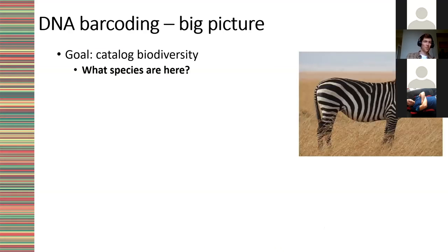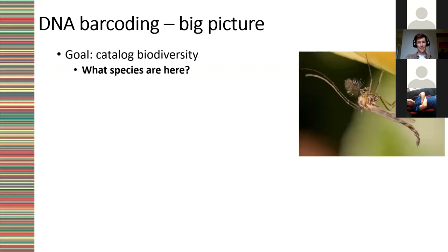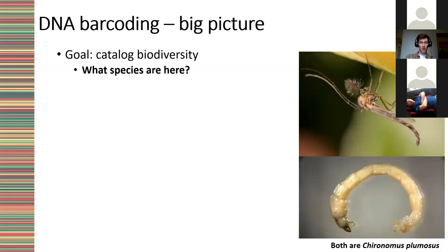The big picture of what we're trying to do at the Center for Biodiversity Genomics in the Adamovich lab is often just answer the question: what species are here? If we're walking in the African savanna and we see a zebra, that's a pretty easy question to answer, but this isn't always the case. A lot of times organisms can be rather small and look very similar to one another, and not all organisms have been characterized already — that's where DNA barcoding comes in.